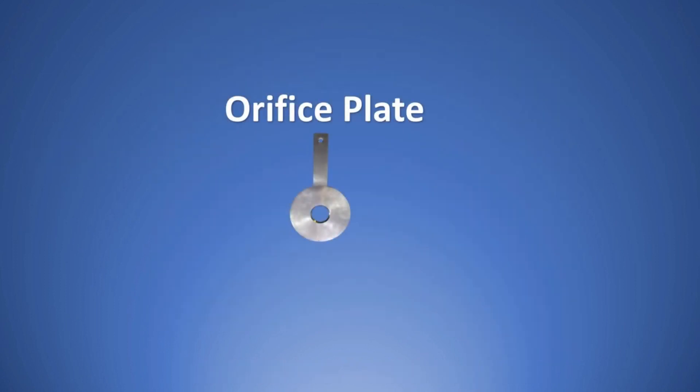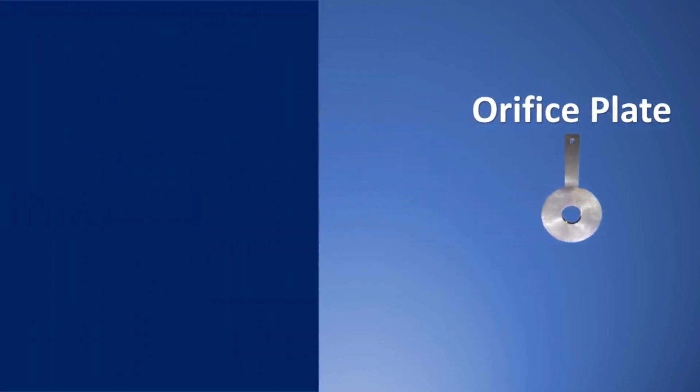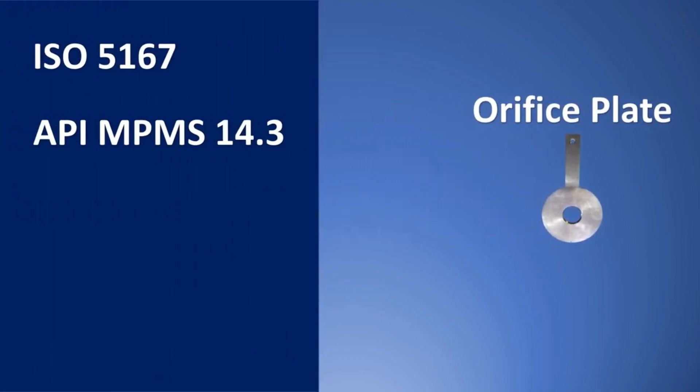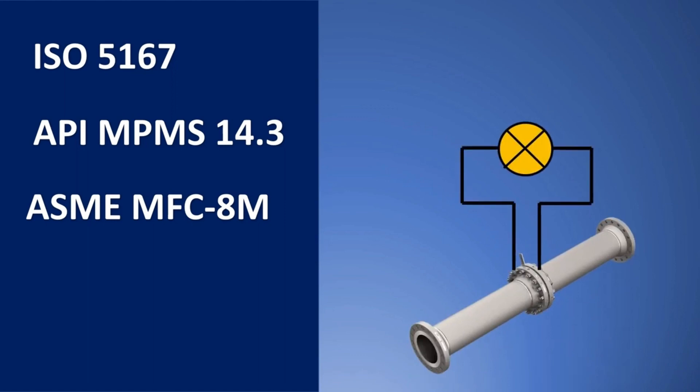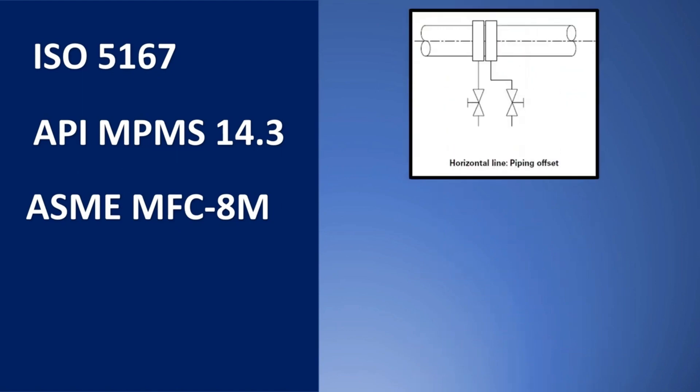Now you have learnt for orifice plates these two amazing standards which were ISO 5167 and API MPMS 14.3. There is another amazing standard which is ASME MFC 8M. But you would say, oh my god, there are already two amazing standards. Why do you need this one? This basically is the connection between the orifice's primary element to the transmitter. How is this area being taken care? Now the engineering here is also very important. Let us try to take some examples for it.